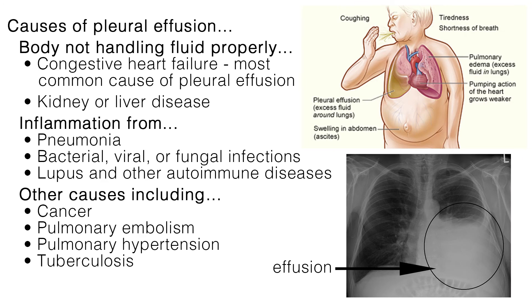What causes pleural effusion, or the buildup of fluid in the pleural cavity, leading to the need for thoracentesis? There could be conditions in which the body is not handling fluid properly, such as congestive heart failure — the most common cause of pleural effusion — and kidney or liver disease. Also, inflammation from pneumonia, bacterial, viral, or fungal infections, lupus, and other autoimmune diseases. Other causes include cancer, pulmonary embolism, pulmonary hypertension, and tuberculosis.